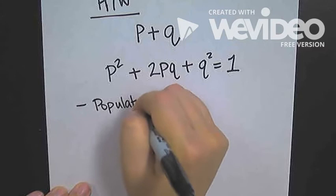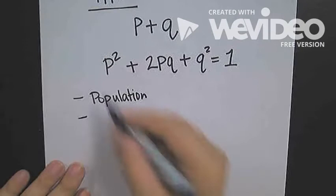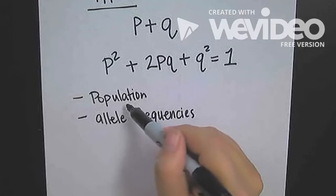We are looking at not individuals, we are looking at entire populations. When we look at these populations, we want to look at the allele frequencies, how much of each allele there is within a population.